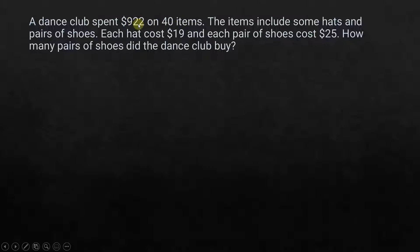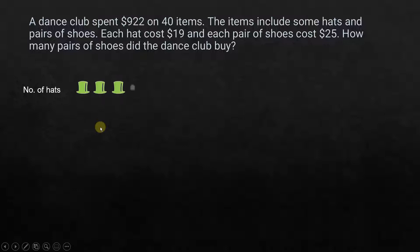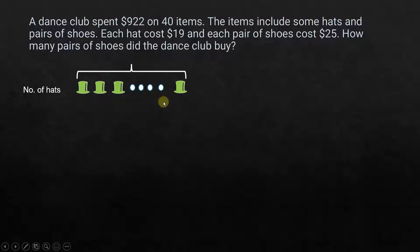First, what we know: the total cost spent was $922 on hats and pairs of shoes, and the total number of shoes and hats together is 40. But we don't know how many hats or how many pairs of shoes. Let's say we have some number of hats — we don't know how many, but it can be any number.